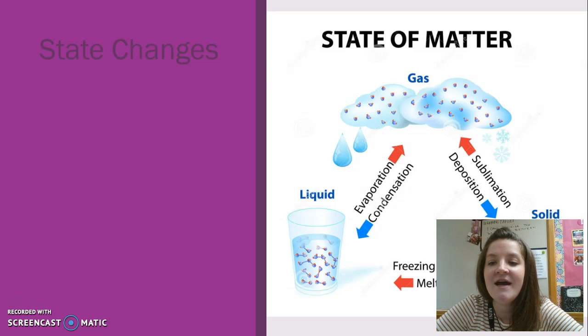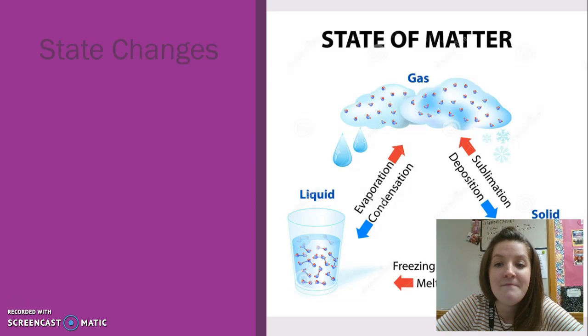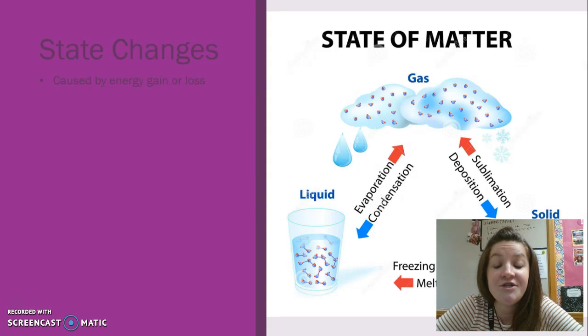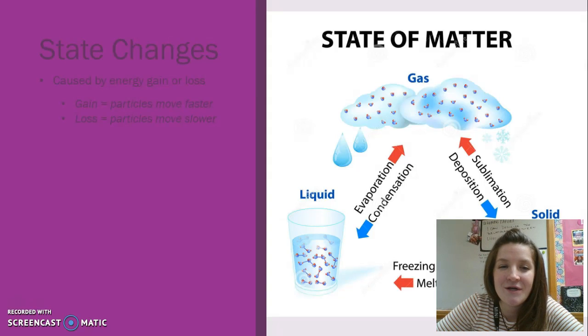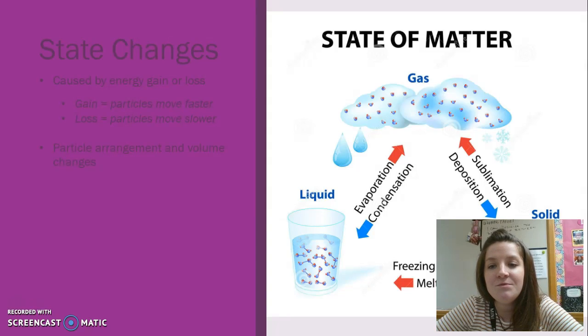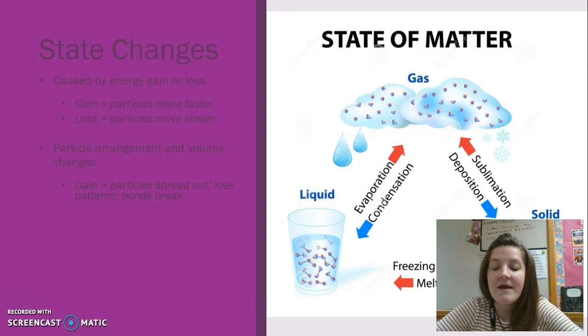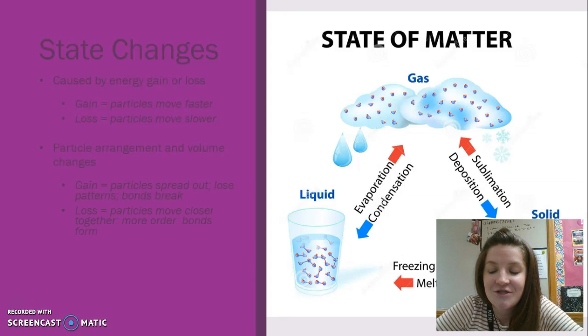We've completed this triangle now, identifying each of the states of matter and how they change. Some things to keep in mind: state changes are caused by energy gain or loss. When particles gain energy, they move faster. When they lose energy, they move slower and closer together. Particle arrangement and volume changes with energy gain and loss as well. When particles gain energy, they spread apart, and they lose their patterns and bonds break. When particles lose energy, they move closer together. There's more order to the particles and more bonds form.